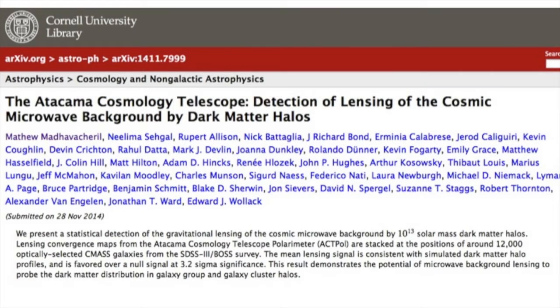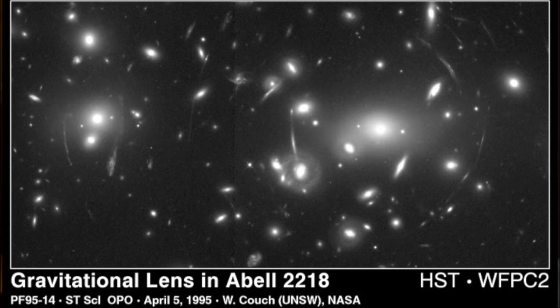The paper I led is on measuring the masses of groups of galaxies based on how these galaxies bend light that is left over from the Big Bang. As the universe evolves, matter clusters, and the amount of clustering at different periods of the universe is determined by the nature of dark energy and whether or not Einstein's general relativity is correct.